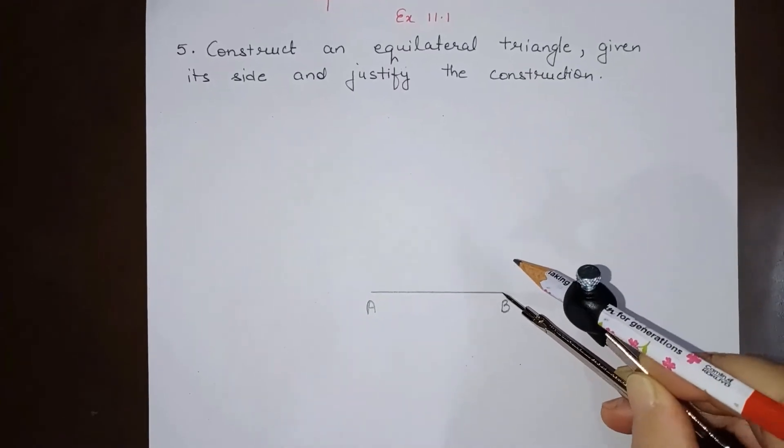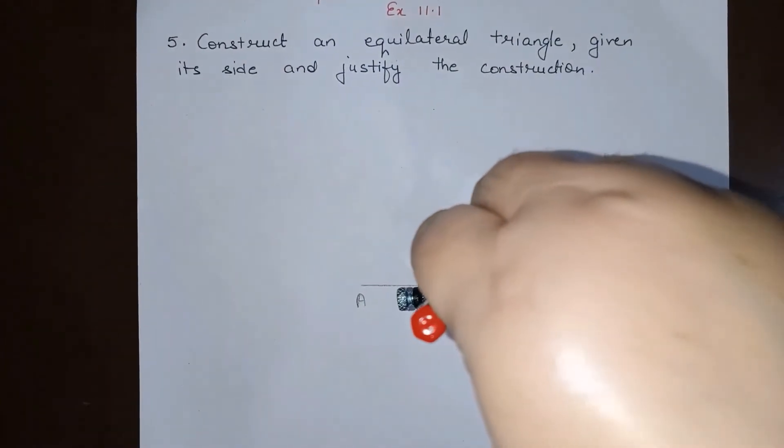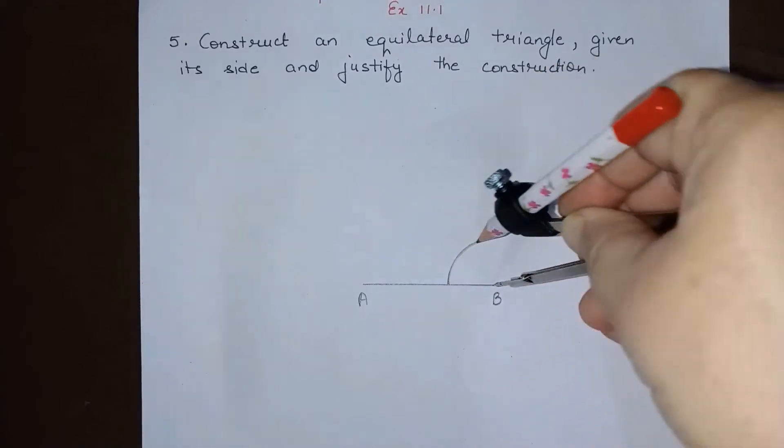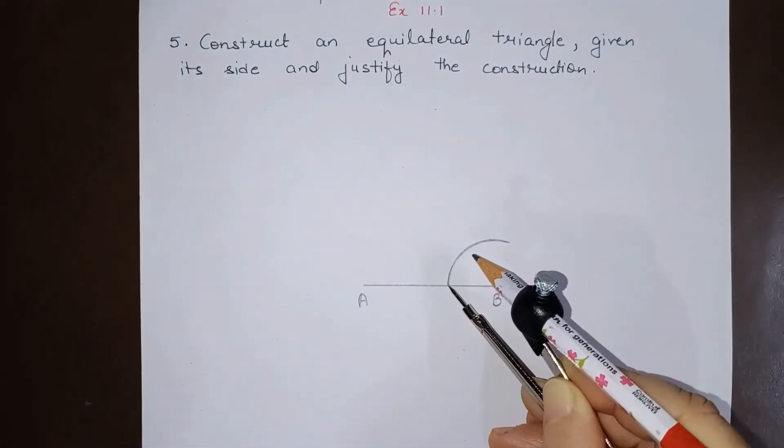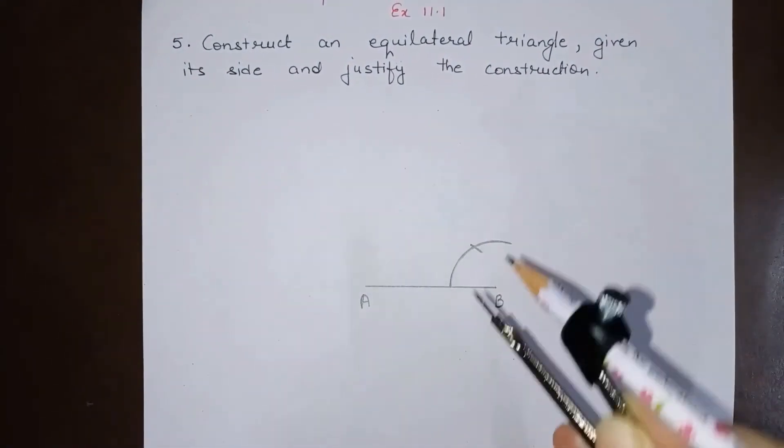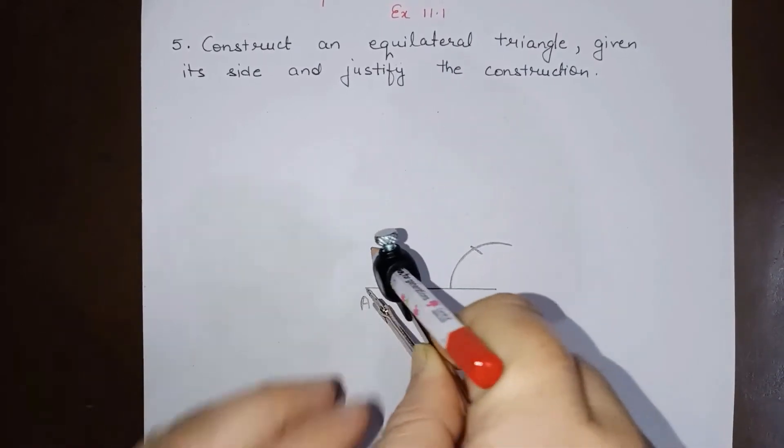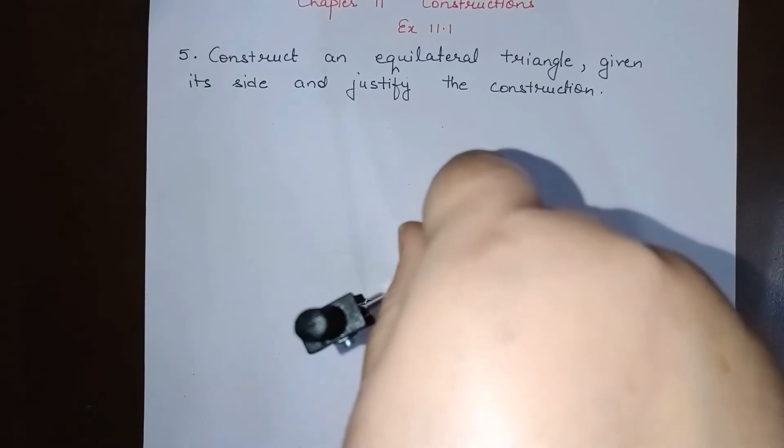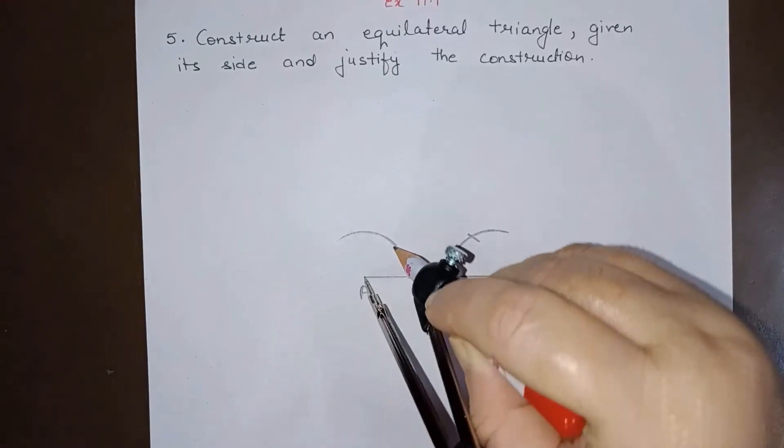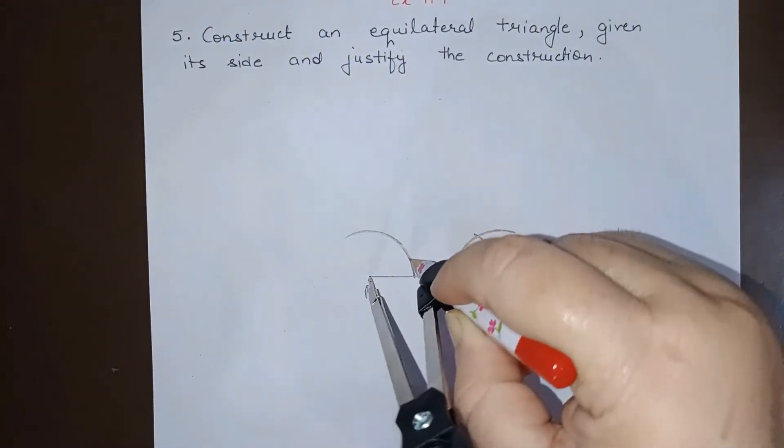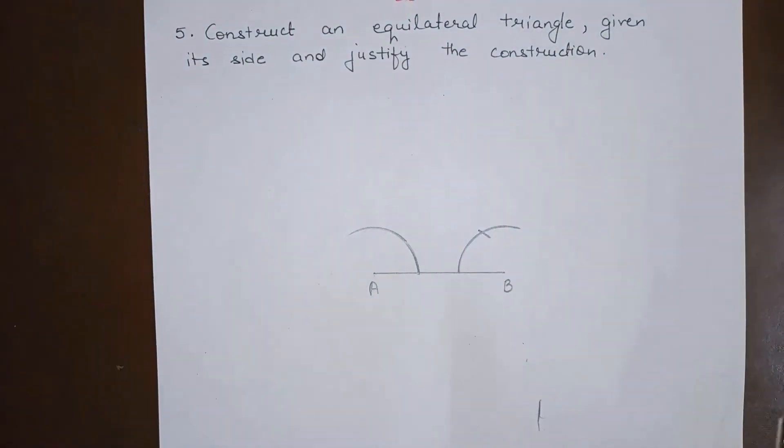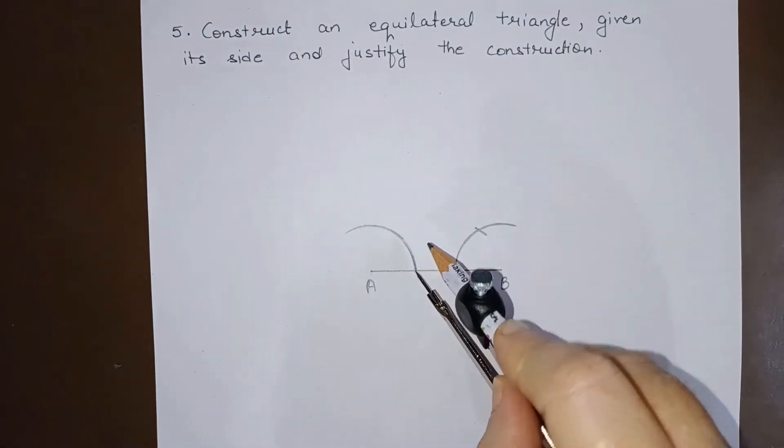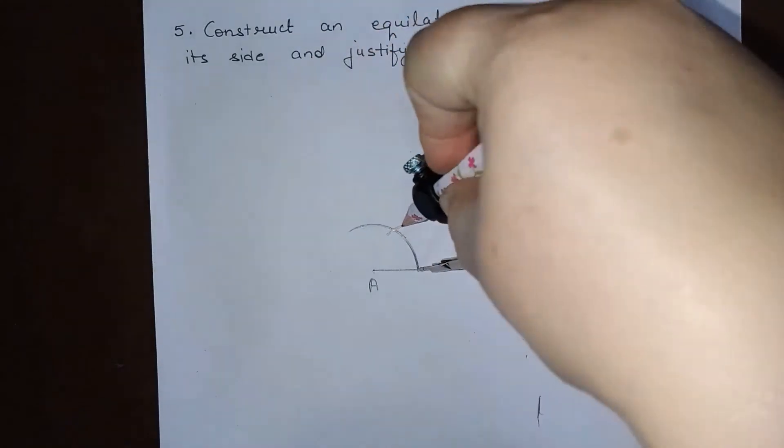So on this AB I will draw this angle here, 60 degree angle like this, and similarly here at point A we will draw an angle of 60 degree. So like this.